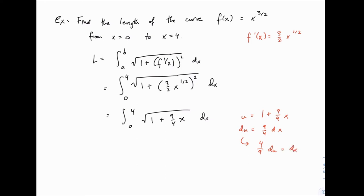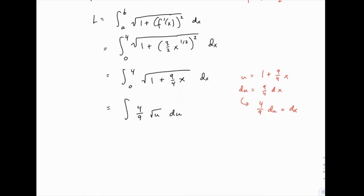So now we're ready to make our substitution. This gives us the integral of the square root of u times 4 ninths du. And to make this easier to integrate, maybe we can pull out the 4 ninths, and then rewrite the square root of u as u to the 1 half.